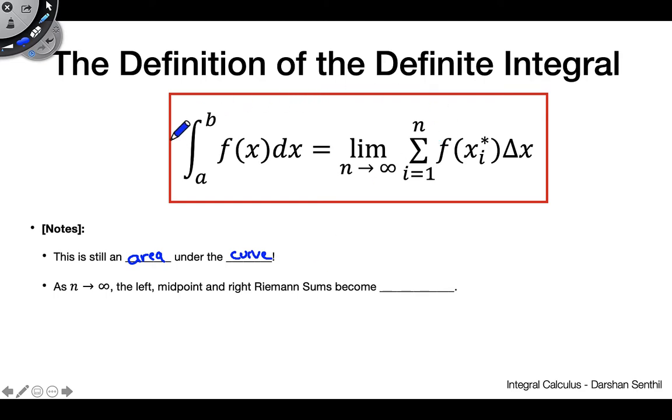Just because now we have some fancy new notation for it does not mean that this thing is no longer an area under the curve. It's still an area under the curve. And because of this, we can use this for the same things we've been using it for so far.